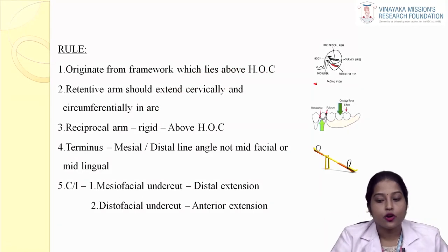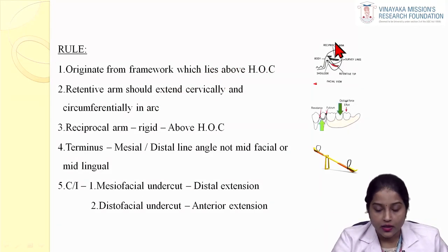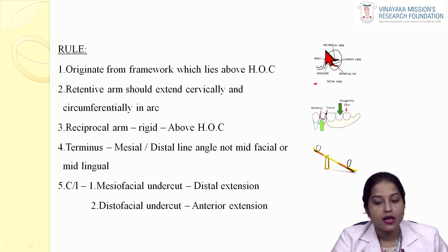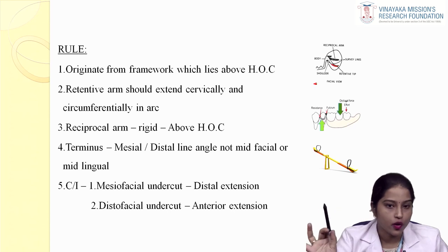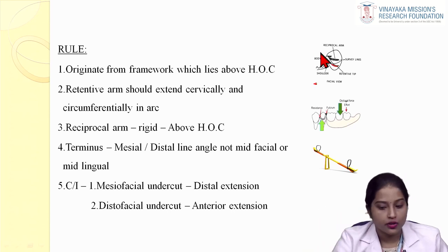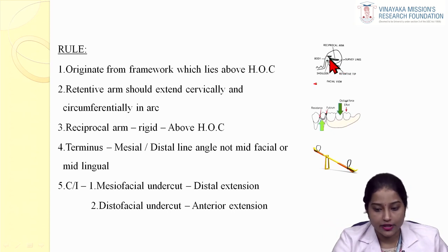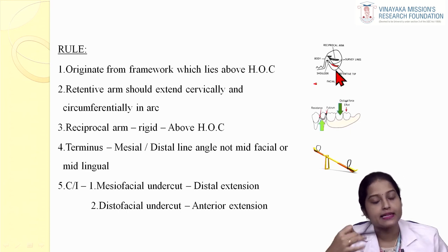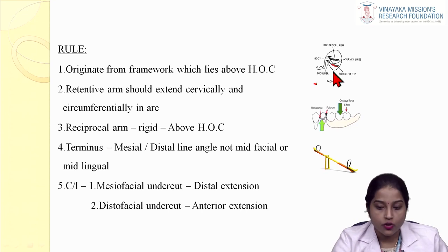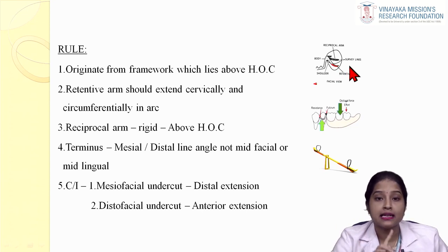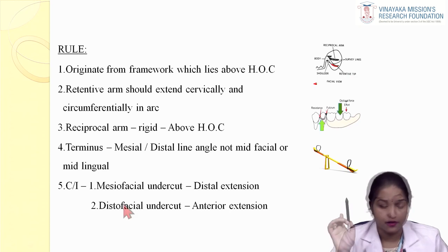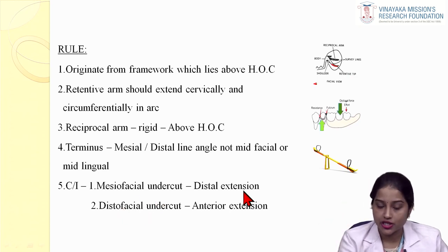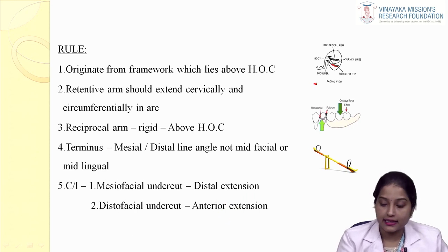Rules for fabricating a circumferential clasp: it should always originate from the framework above the height of contour; the retentive arm should extend cervically and circumferentially in an arc-shaped fashion; the reciprocal arm should be rigid and placed above the height of contour; and the terminus should always end in the mesial or distal line angle, not mid-facial or mid-distal. It is contraindicated for mesiofacial undercut in distal extension cases and distofacial undercut in anterior extension cases.